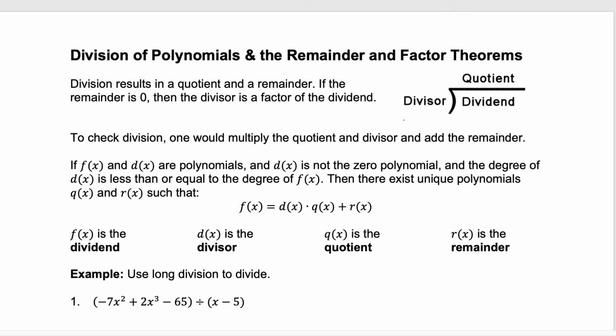Polynomial division works just like the division we've done with everyday numbers. You have a dividend and a divisor, and you end up with a quotient. Now, if the remainder is zero, then we find out that our divisor is actually a factor of our dividend.